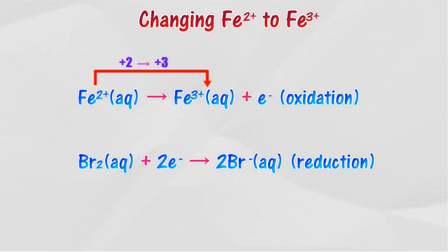Fe2+ ion releases an electron to form Fe3+ ion. The transfer of electrons occurs from Fe2+ ion to bromine. Bromine receives electrons to form bromide ion.